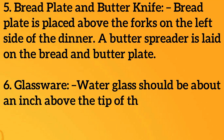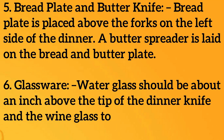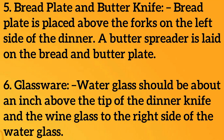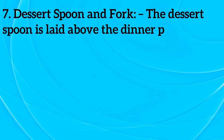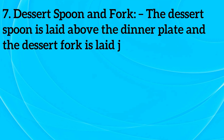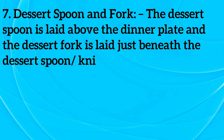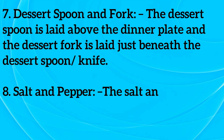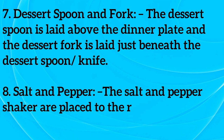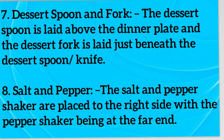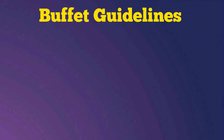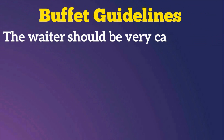A butter spreader is laid on the bread and butter plate. For glassware, the water glass should be placed about an inch above the tip of the dinner knife, and the wine glass to the right side of the water glass. The dessert spoon is laid above the dinner plate and the dessert fork is laid just beneath the dessert spoon. Salt and pepper shakers are placed to the right side, with the pepper shaker at the far end.